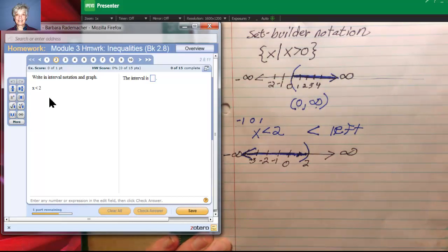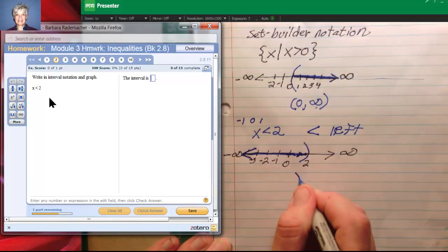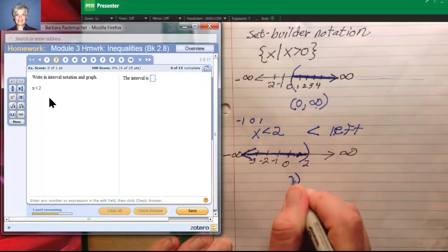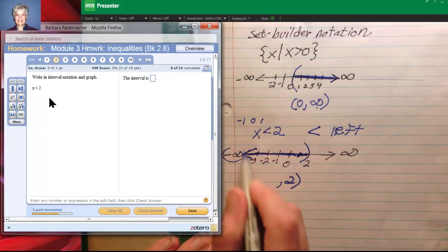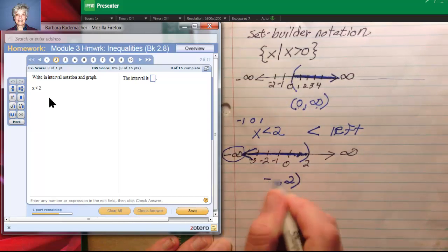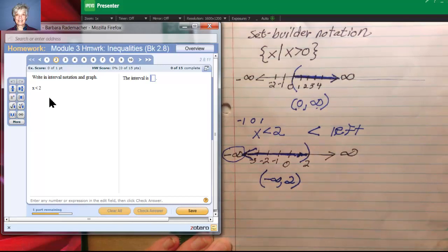Remember interval notation looks just about like the graph. So on the right, I would have something that looked like this. But on the left, I don't have an end point. This line is going to go forever. So I will put negative infinity in as my left end point. And I always use a parenthesis around an infinity sign.